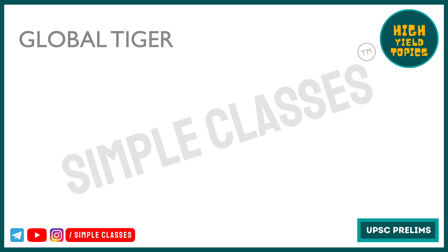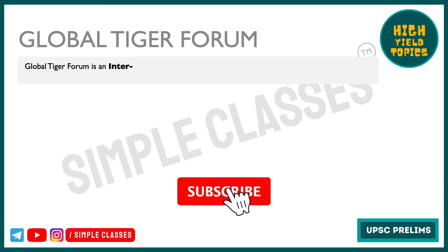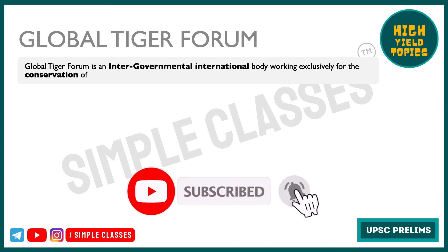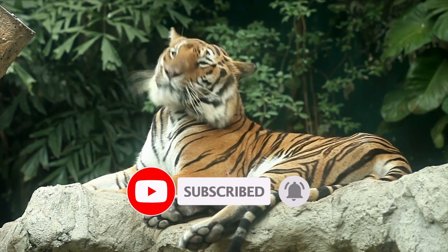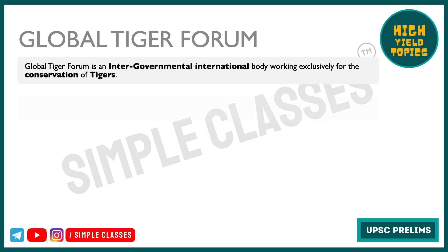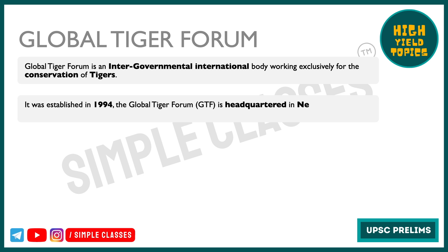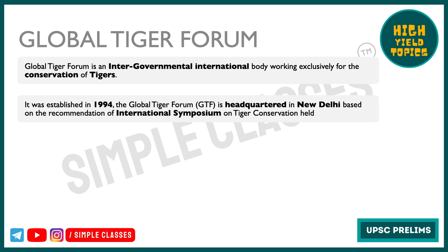Global Tiger Forum is an inter-governmental international body which works exclusively for the purpose of conservation of tigers. Tigers ko bachane ke liye ye forum kaam kerti hai. It was established in 1994. In 1993, an international symposium was held in New Delhi on Tiger Conservation, and on the recommendation of this symposium, this forum was established. Its headquarter is in New Delhi — ye facts aapko yad rakhne hai from a Prelims point of view.